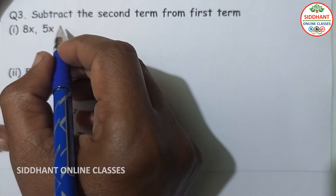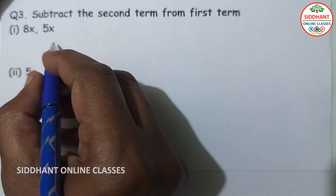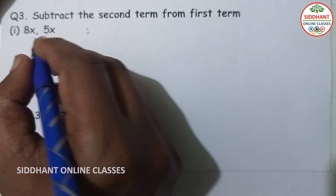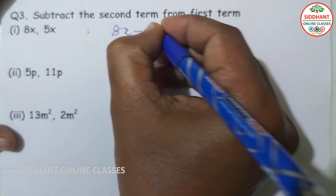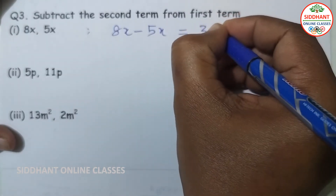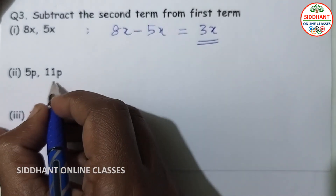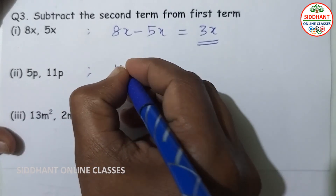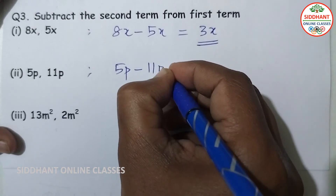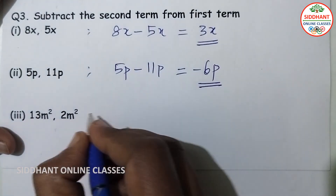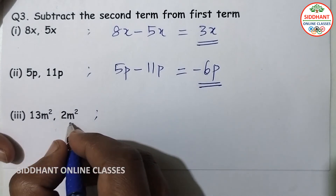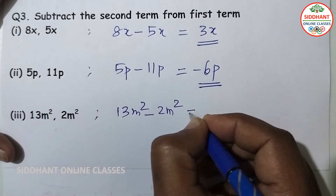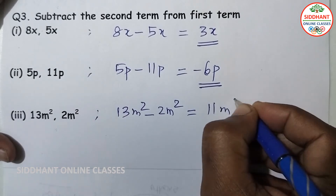Question number 3: subtract the second term from the first term. First: 8X minus 5X. Second: 5X minus 6X. Third: 13M square minus 2M square, so that will be 11M square.